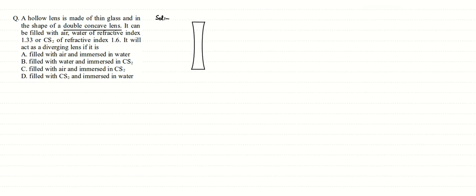In this question, we are given a hollow lens made of thin glass in the shape of a double concave lens. So first of all, we have a double concave lens here. Let's draw that concave lens — this is a double concave lens.